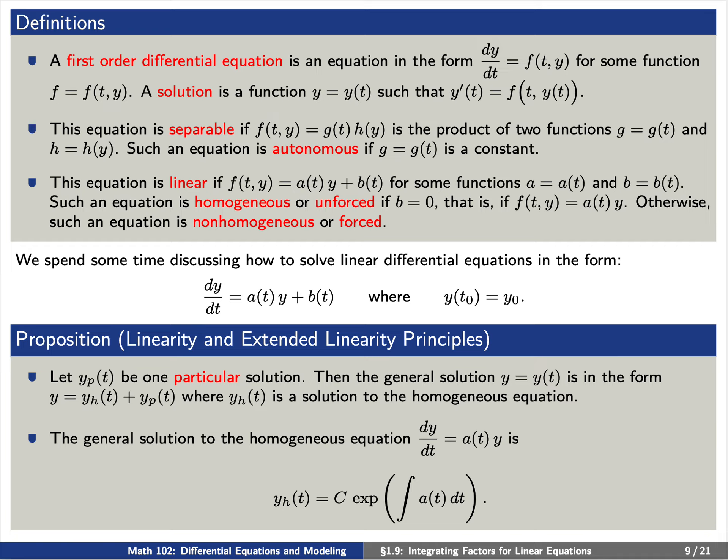Let's say that y_p is one particular solution to this non-homogeneous equation. Then the general solution y of t is in the form y_h plus y_p, where y_h is the solution to the homogeneous equation. The general solution to the homogeneous equation is as follows: y_h equals a constant times the exponential of the integral of a of t dt.